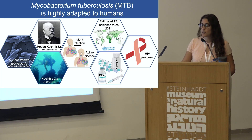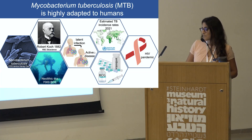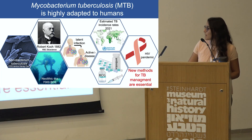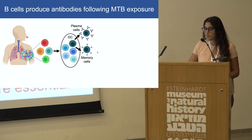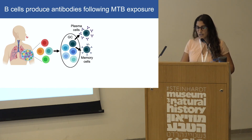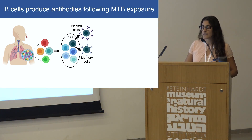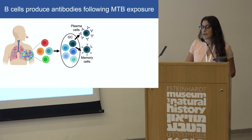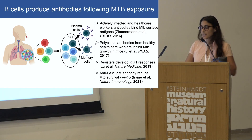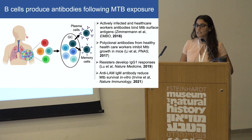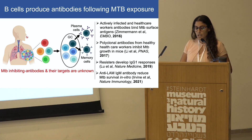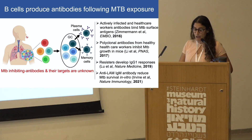Another challenge is the rise in immunocompromised individuals, especially HIV-infected. Therefore, new methods for TB prevention and treatment are essential. Following pathogen encounter, there is activation of both adaptive and innate immune responses. As part of the adaptive immunity, B cells are stimulated by the pathogen and differentiated into antigen-specific memory B cells and antibody-secreting cells. Specifically in TB, the role of B cells and antibodies is considered controversial, and despite recent research, inhibiting antibodies and their targets are still unknown.